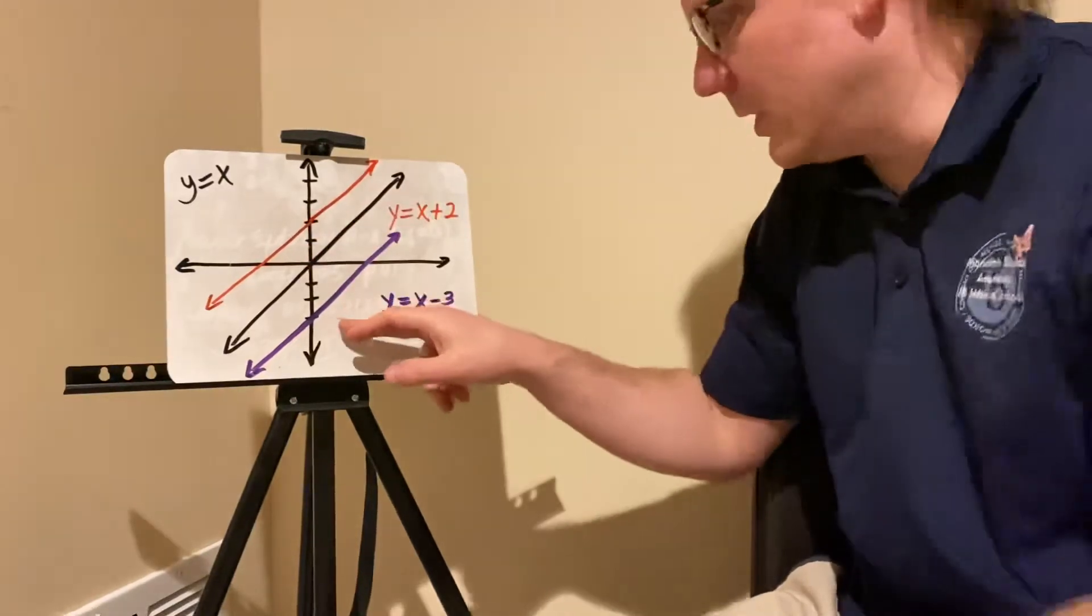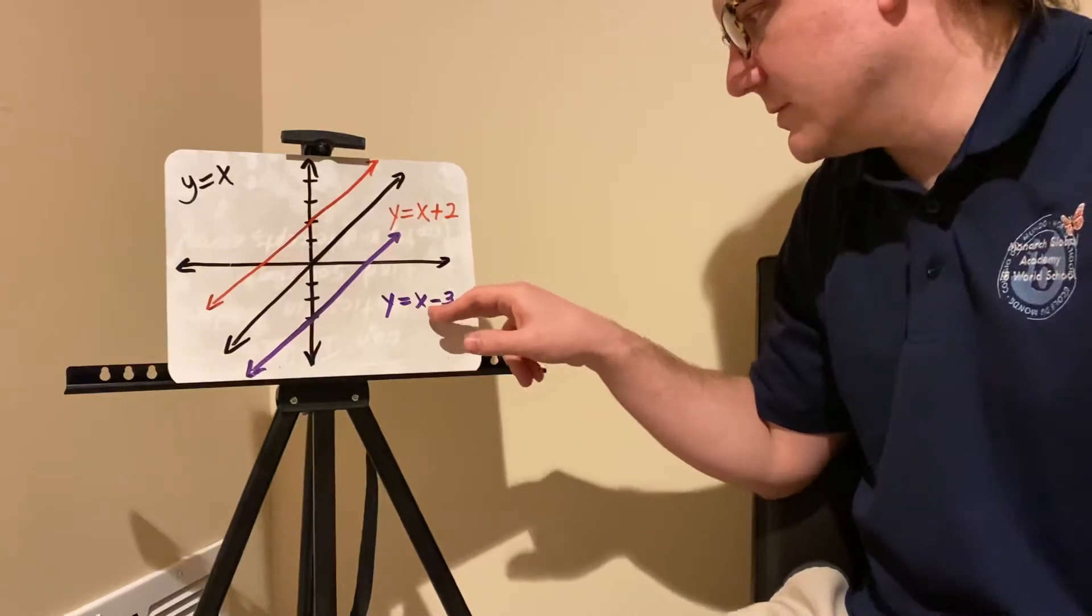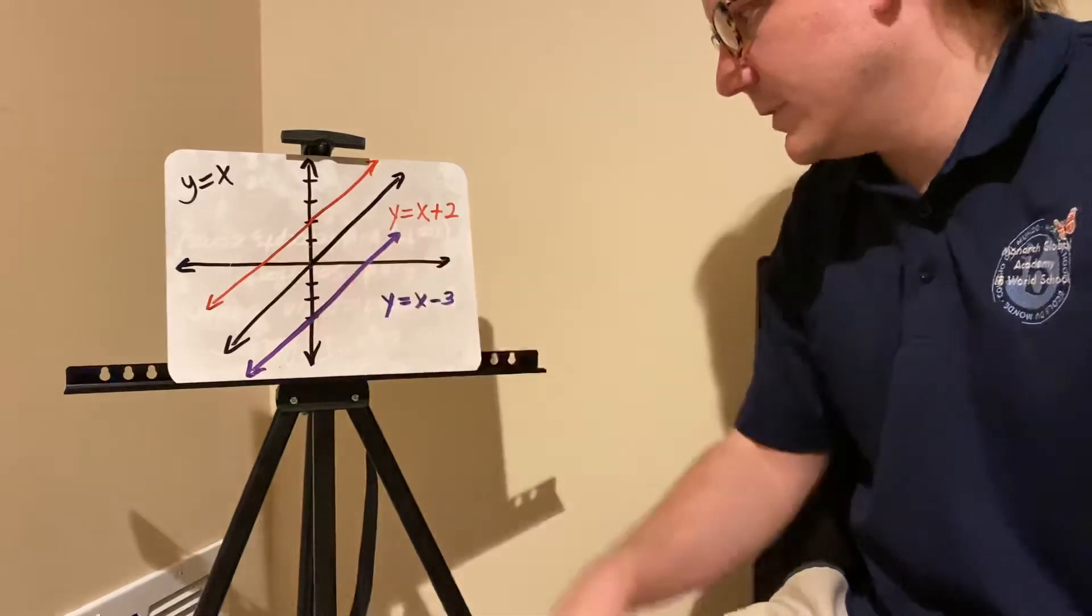On the purple line, when x is 0, you subtract 3. So 0 minus 3 is negative 3. So your y-intercept is 0, negative 3.